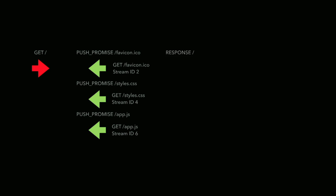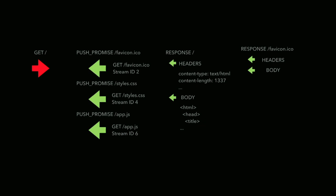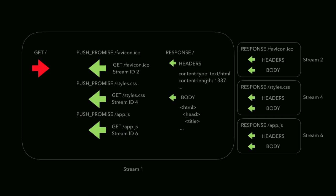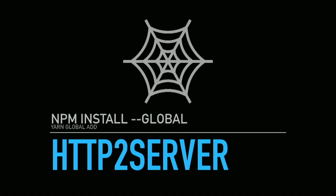Finally, it serves the actual response to the original request — the headers and the body. Once the browser has that, it starts pushing all those promises, serving the responses to the requests it pretended occurred. All of those go over the wire, with lots of streams going on independently, so you can prioritize and schedule things. It's pretty cool. We've got a tool called HTTP2 server — let's do a demo.